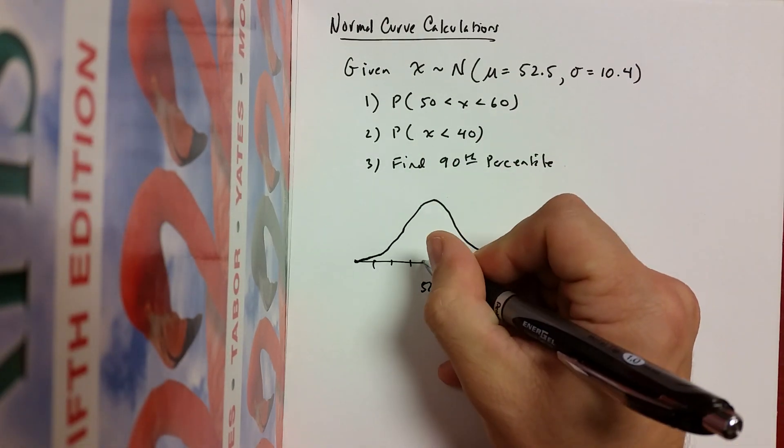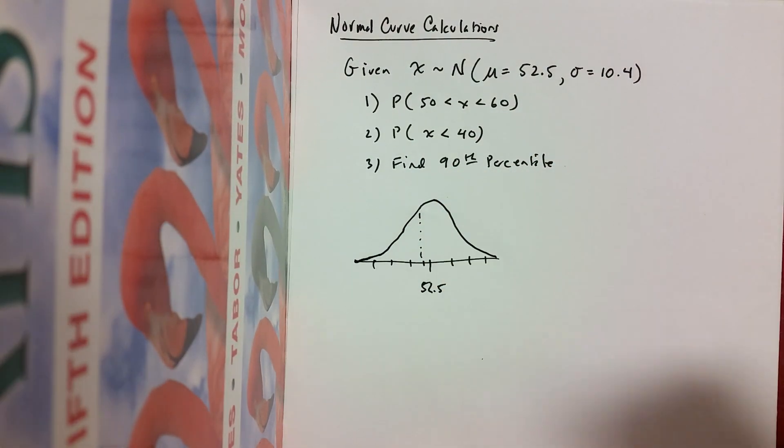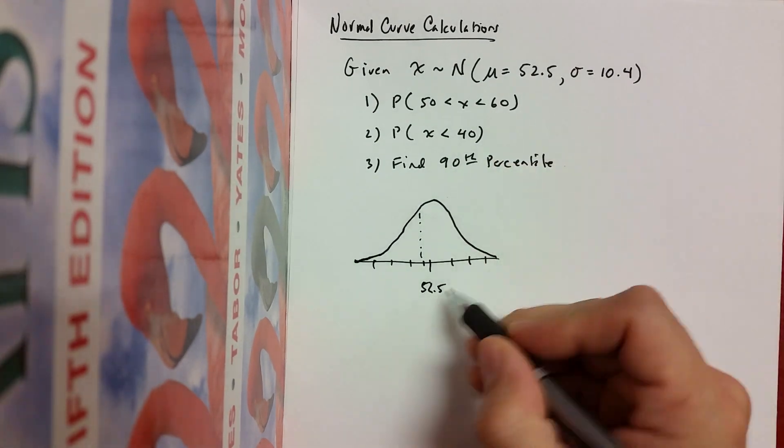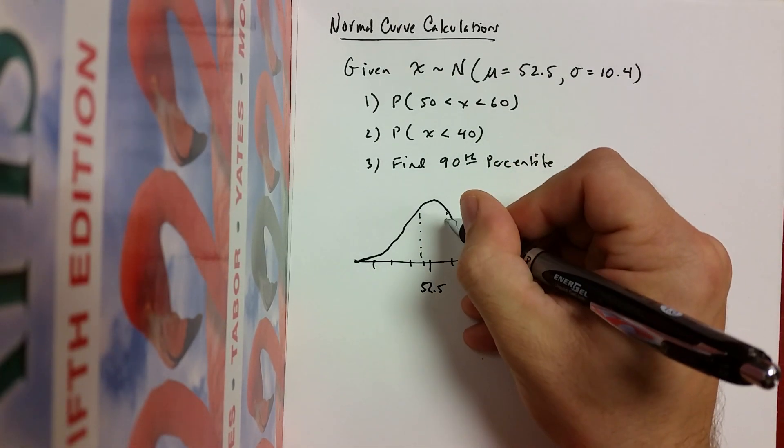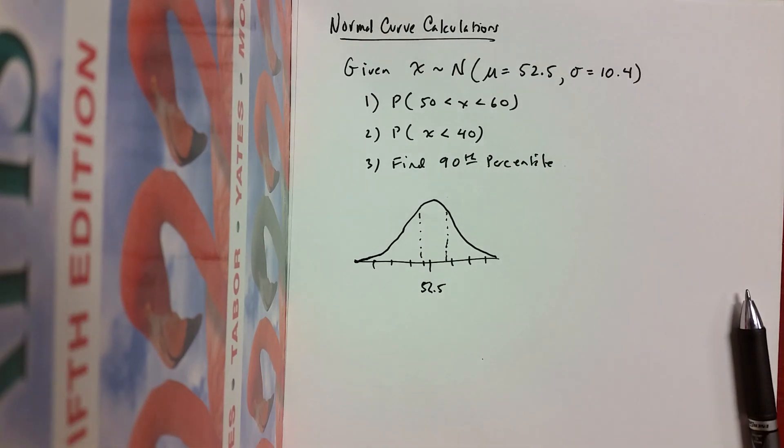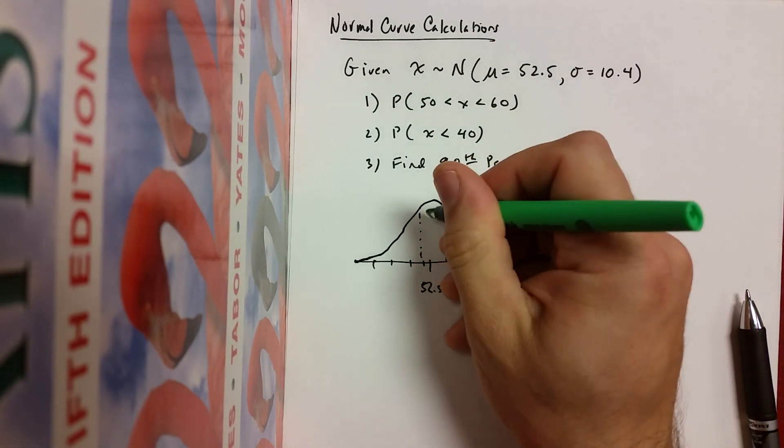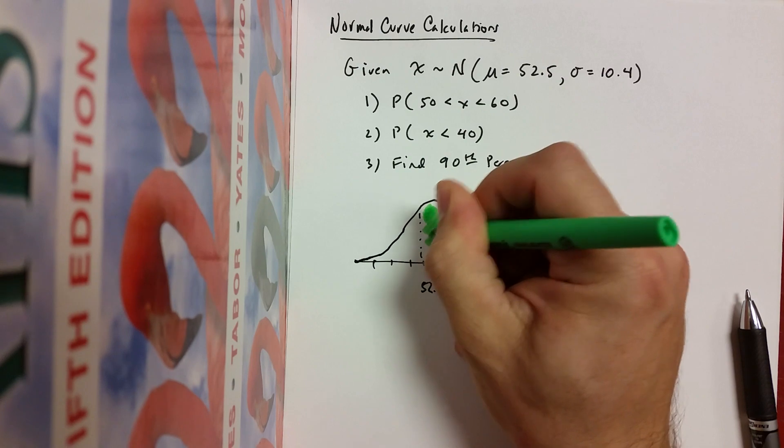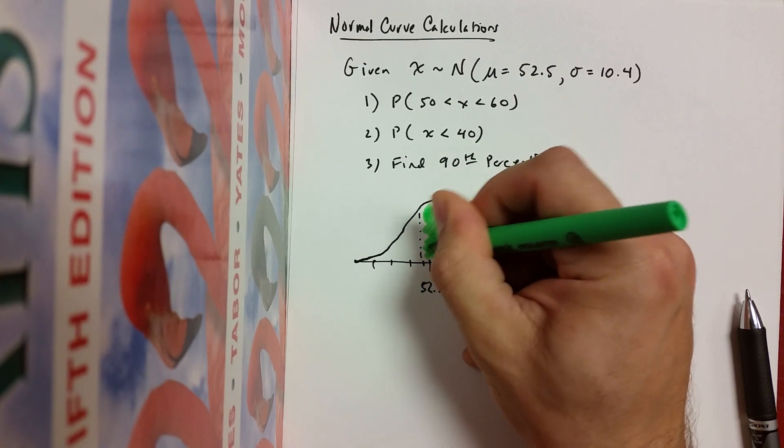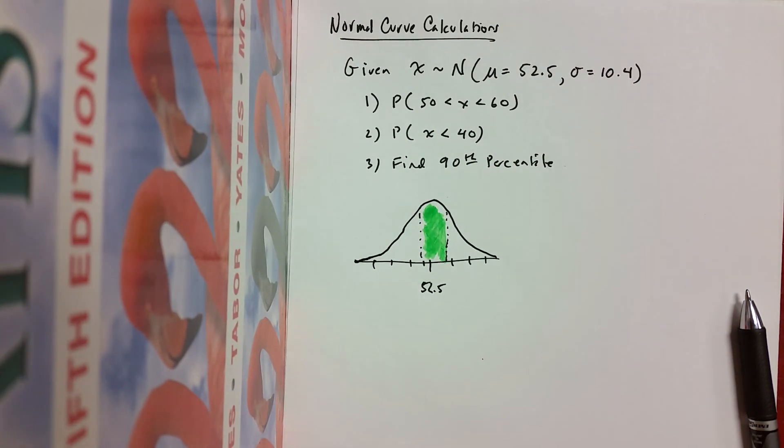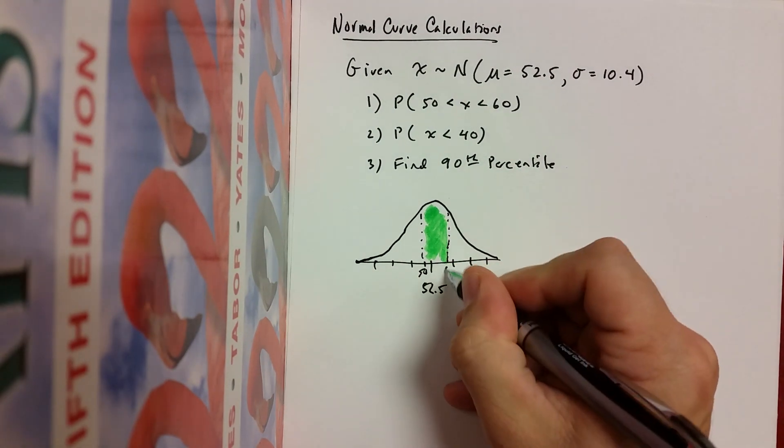50 is a little bit less than 52, so I'm just going to go like that. And 60, well, that's less than one standard deviation above the mean. That Z-score would be something or other, but I'm too lazy to calculate it. So this is the area that I'm actually looking for, everything between 50 and 60 in this normal distribution. So I'll label that 50 and that's 60.